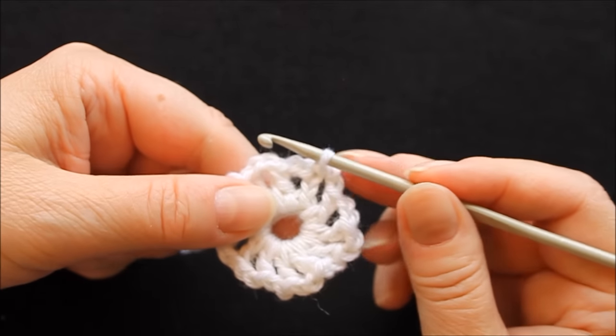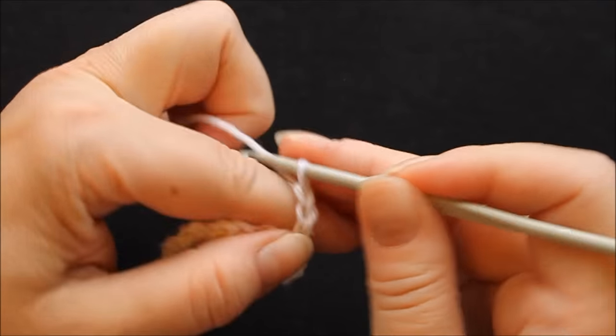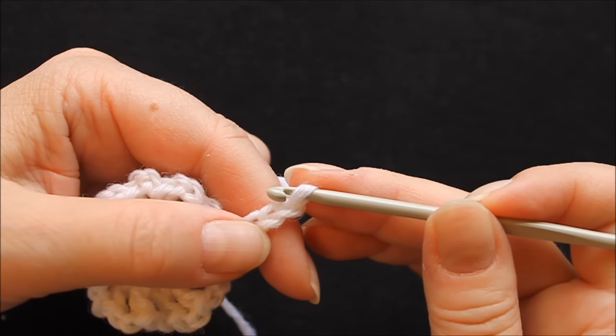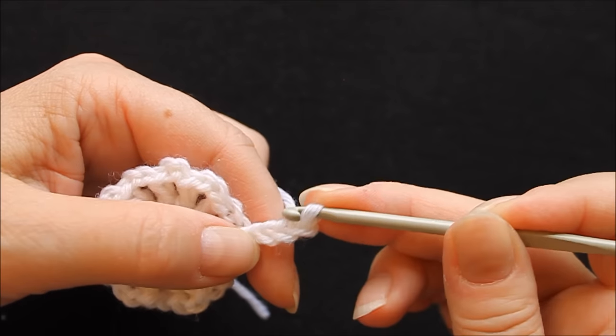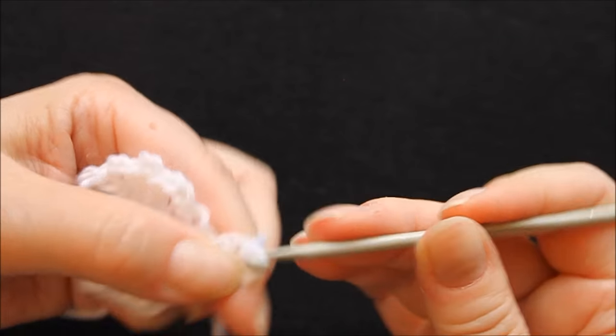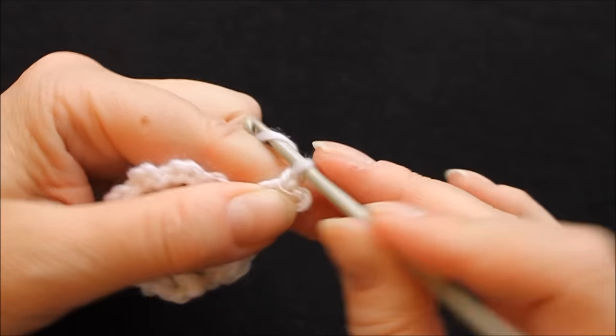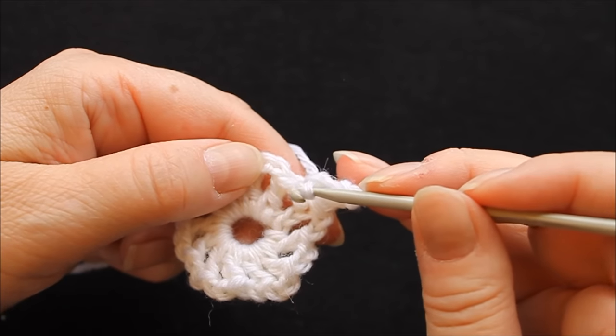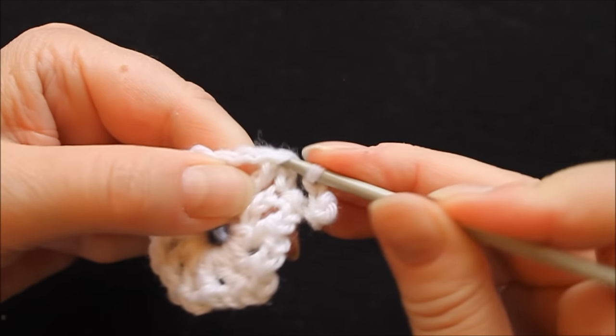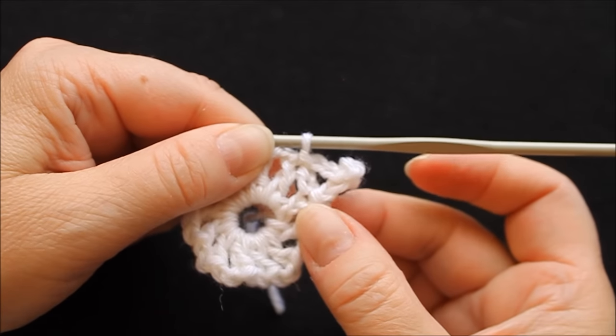I'll start with the picot, chain four, then I count backwards to the third from the hook and slip stitch there. Then again chain two and go to the top of the next treble on the previous row and slip stitch there. So that's that bit done.